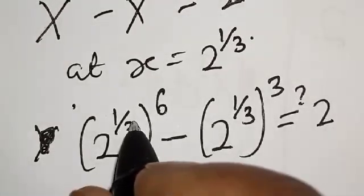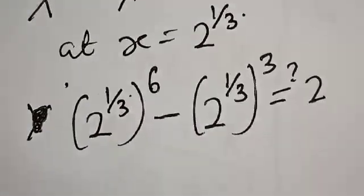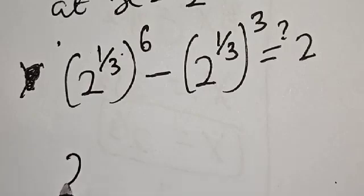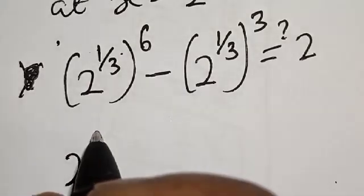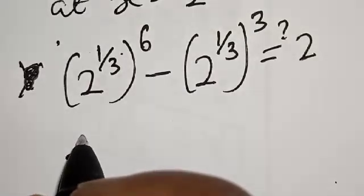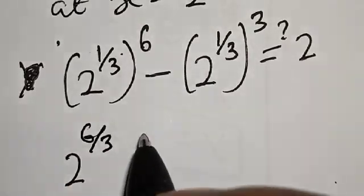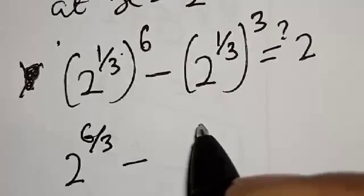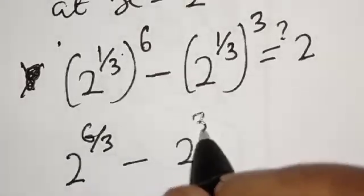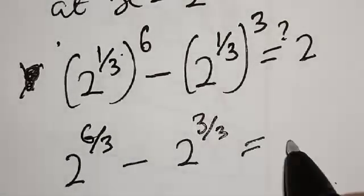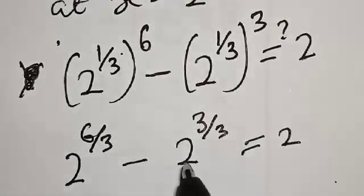This is the same as 2 raised to power 6 over 3 minus 2 raised to power 3 over 3, and this must be equal to 2.